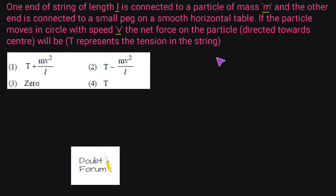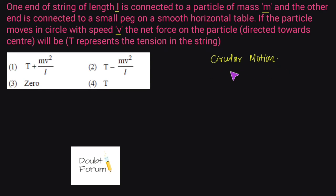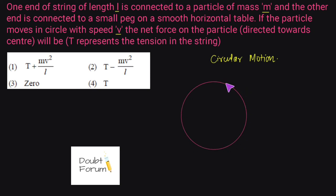After reading this question, it has become clear that this question is based on circular motion. So before I tell you the answer, let me explain a little bit about circular motion. A circular motion is a motion when an object moves along the circumference of a circle. Suppose this is a circle and if an object is moving along the circumference of the circle, we call this motion circular motion.